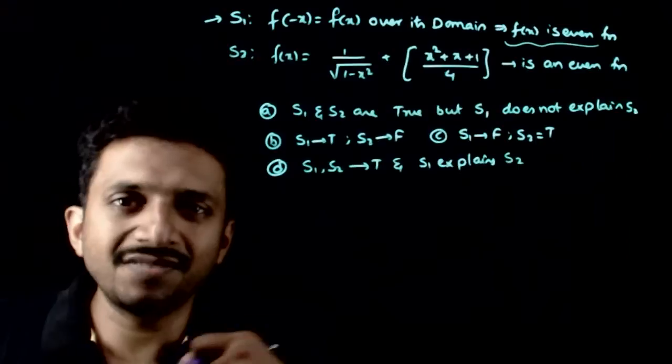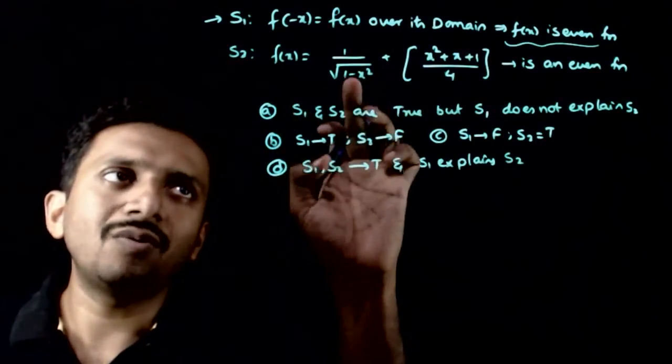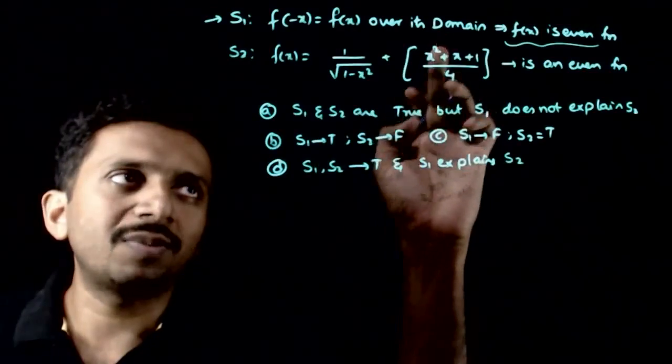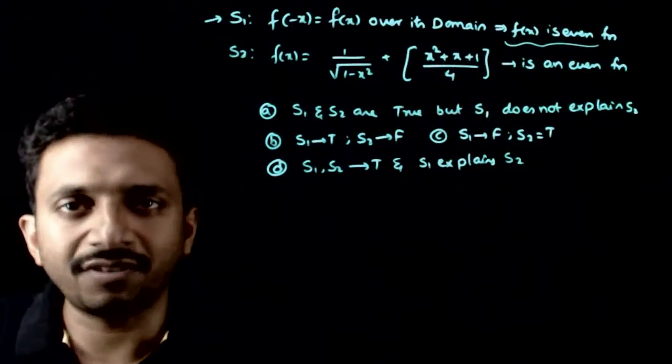Obviously statement one is true; that is the definition of even function. The second statement is f(x) = 1/√(1-x²) + [x² + x + 1/4] is an even function, where brackets denote the integer part.